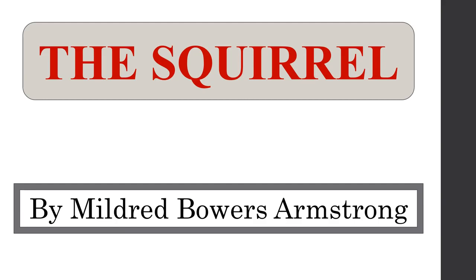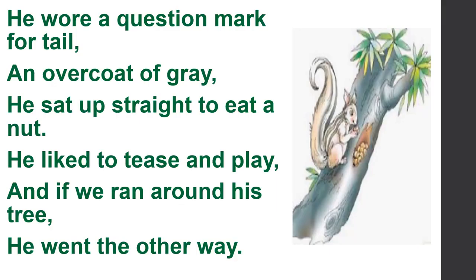This is a poem written by Mildred Bose Armstrong. The poem goes: He wore a cushion mark for tail, an overcoat of grey, he sat up straight to eat a nut, he liked to tease and play, and if we ran around his tree, he went the other way.